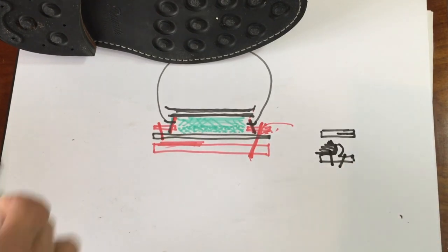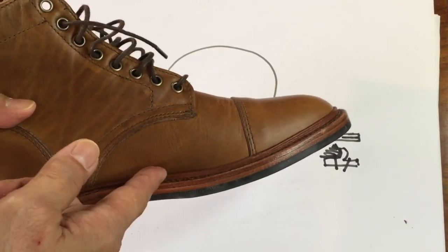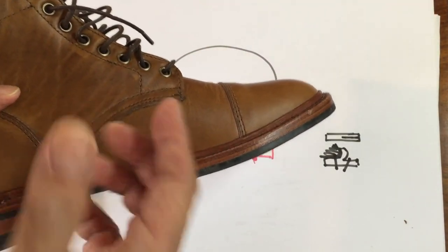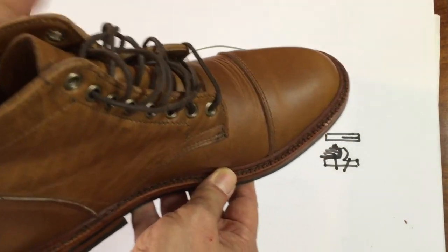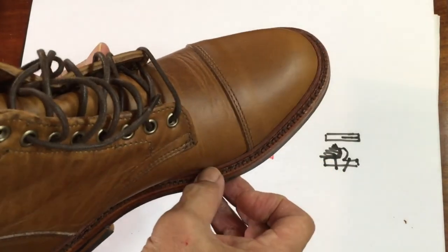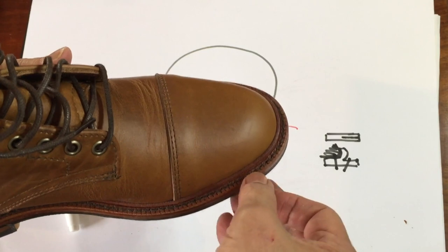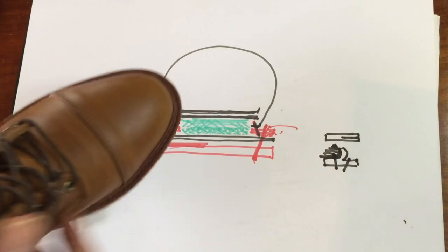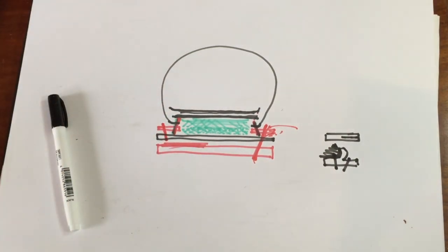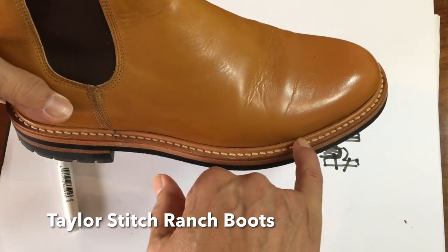And that way, that little bit of flanged welt pushes up against the uppers and makes it even more water resilient. Now, the difference between a split reverse welt and a storm welt is that in a split reverse welt, you can see that the edge of the leather is actually quite raw because it's split, it's the edge of the leather. A storm welt on the other hand, like on these tailor stitch boots, you can see that it's actually finished.